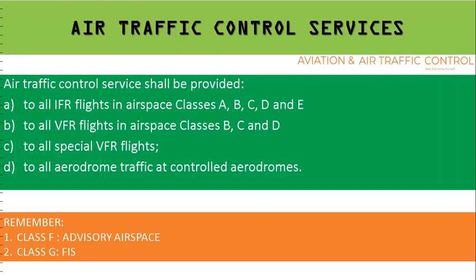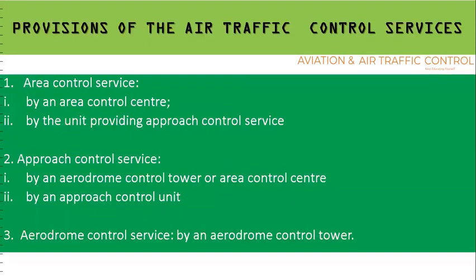Air traffic control services shall also be provided to all special VFR flights and to all aerodrome traffic at controlled aerodromes. This service has to be provided with the help of three units: first is area control service, second is approach control service, and third is aerodrome control service.